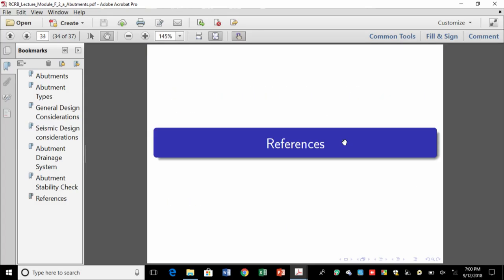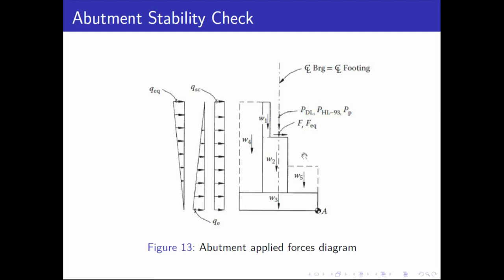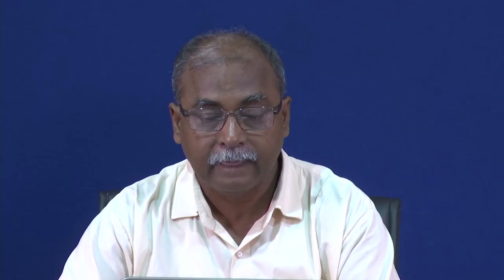Regarding abutment design: the abutment has weights W1, W2, W3, W4 from soil and W5 from other loads. There is a vertical load and you have to check for three things: overturning, bearing pressure and settlement, and sliding. This is essentially the same as retaining wall design.